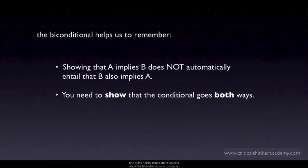One of the helpful things about learning about the biconditional as a concept is that it helps us remember that ordinary conditionals are only half a biconditional. They only go one way. If A implies B, it doesn't follow that you can go backwards and say that B implies A. It reminds us that you need to argue or demonstrate that you can run the inference in the other direction as well.